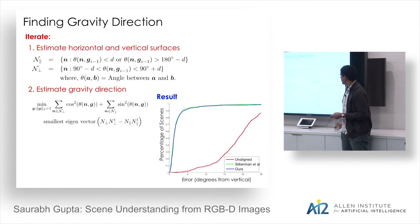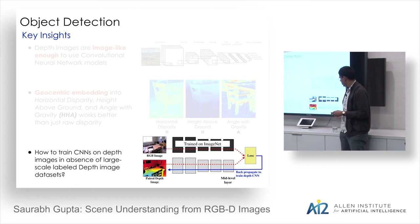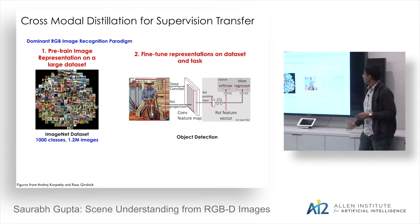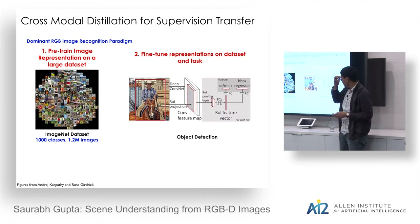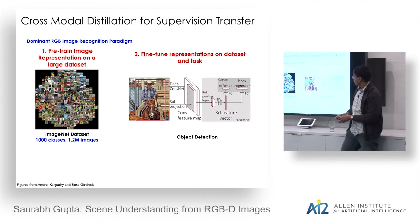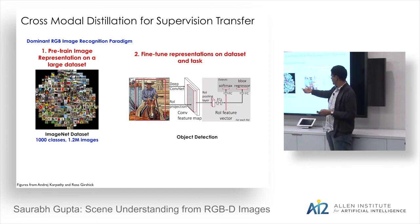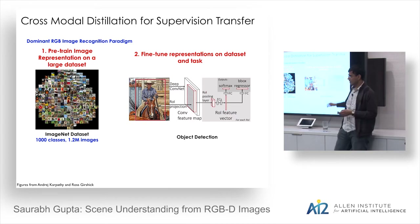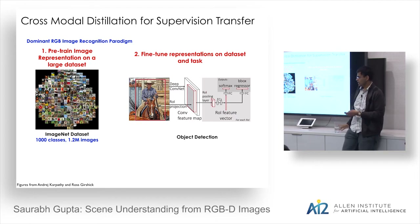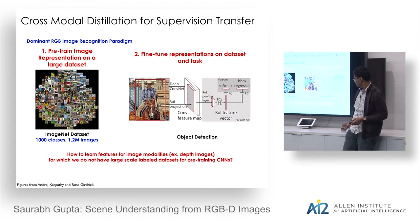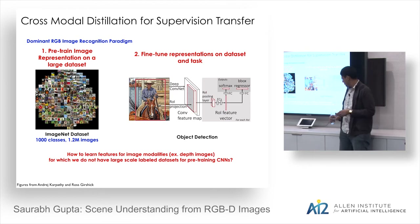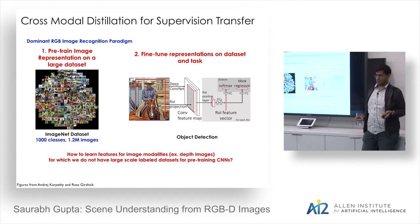Now: how do you train networks on image modalities without enough labeled training data? The dominant paradigm pre-trains a CNN on a large labeled dataset like ImageNet, then fine-tunes it for the specific task and dataset. The question is: how do we learn features for modalities like depth images when no such large-scale labeled data exists?